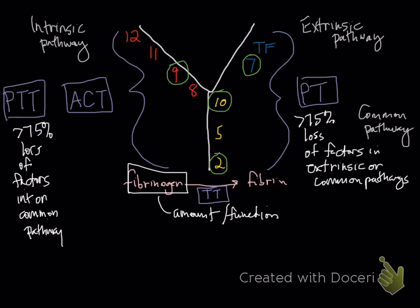The last test, at least on here, is the ACT. And the ACT tests the intrinsic and common pathways similar to the PTT. However, this is not an automated test.